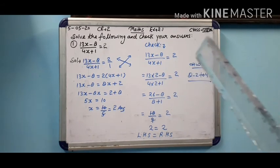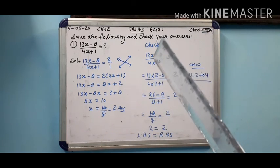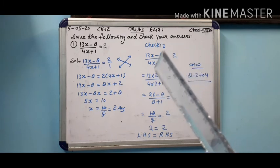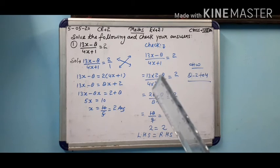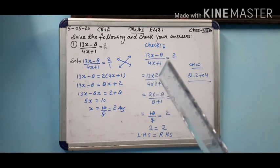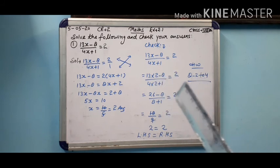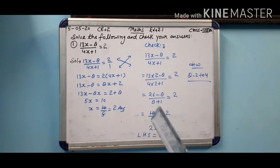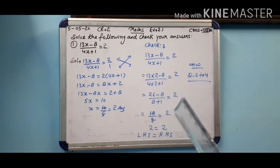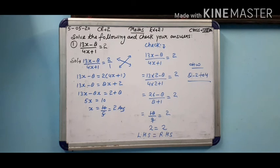Ab verification ke liye: 13x minus 8 upon 4x plus 1 is equal to 2 — question aapne same utar diya. Ab x ki jagah par 2 place karna hai. 13 ki multiply 2 se karenge minus 8, upon mein 4 into 2 plus 1 is equal to 2. 13×2=26. Toh 26 minus 8 upon 4×2=8 plus 1 is equal to 2. 26 minus 8 = 18, upon mein 8 plus 1 = 9, is equal to 2. 9 ke table mein 18 do pe aata hai — so 18/9 = 2. Left hand side equals right hand side. LHS jo hai RHS ke barabar aa gaye. Iska matlab hamara answer theek hai.